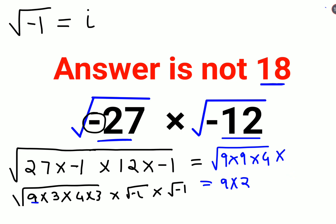But here we had root of negative 1 and root of negative 1, whose value is i into i. So you get i into i gets you i square.